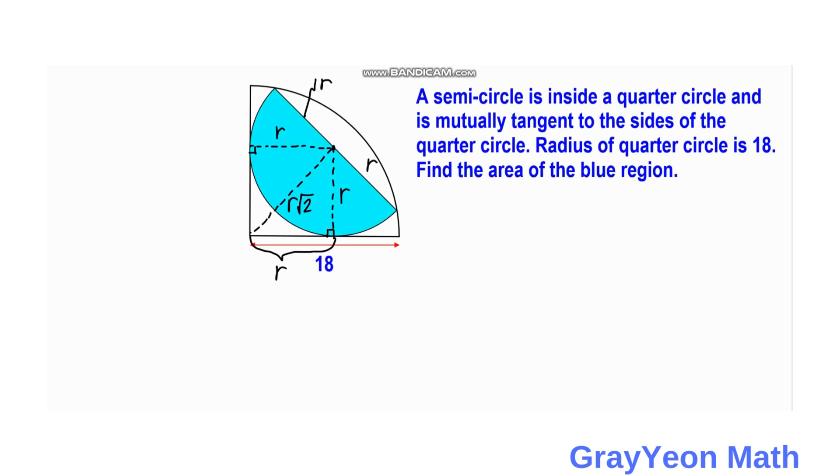So next is we draw the whole circle as if this quarter circle is a whole. So if we make this a whole circle, then it would be like this. And we continue this line, the hypotenuse of the isosceles right triangle, towards a point on the circle. And as you can see, this is actually also 18 because this is the radius of this quarter circle.